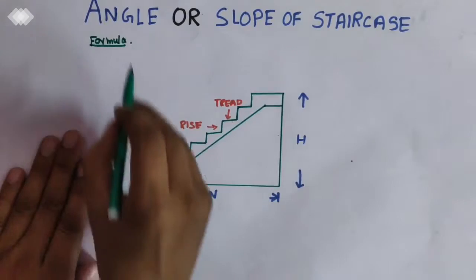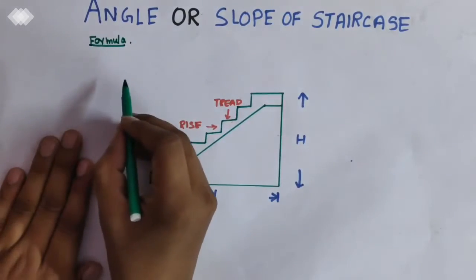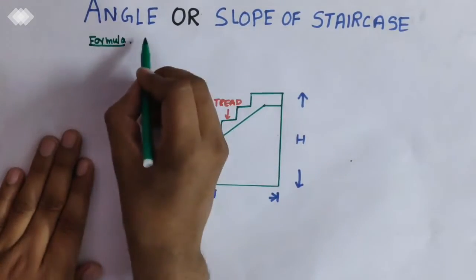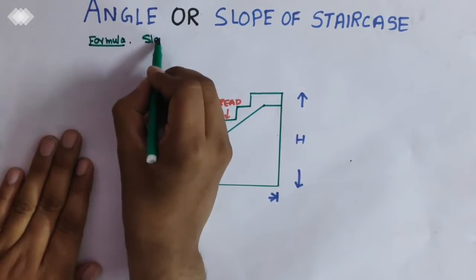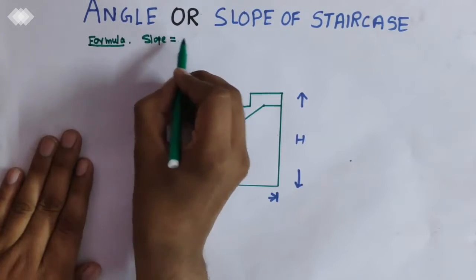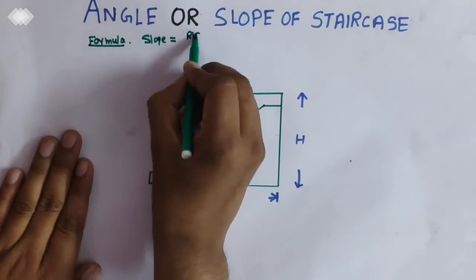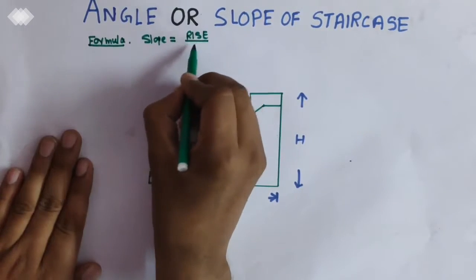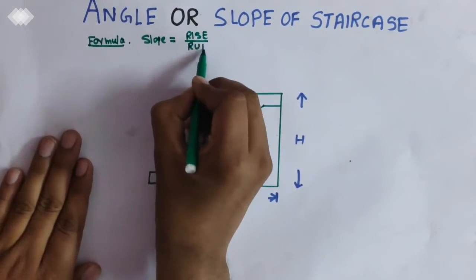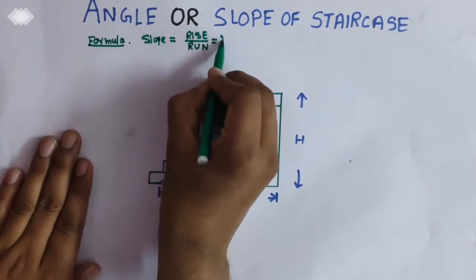Formula for finding the slope of staircase is: the slope is equivalent to rise by run. You can say m.